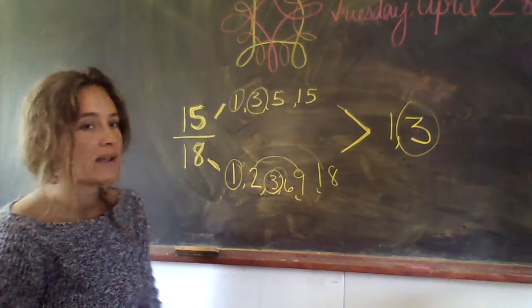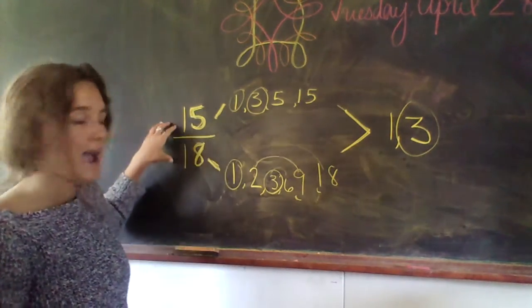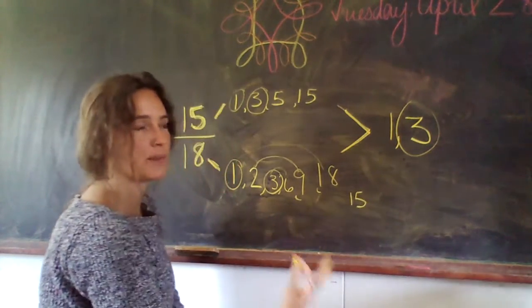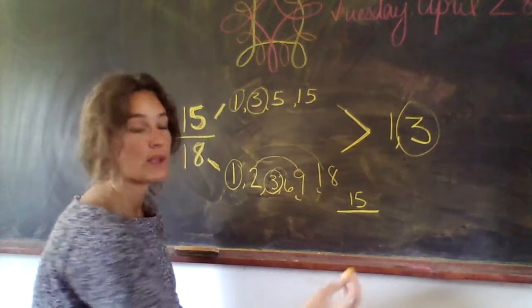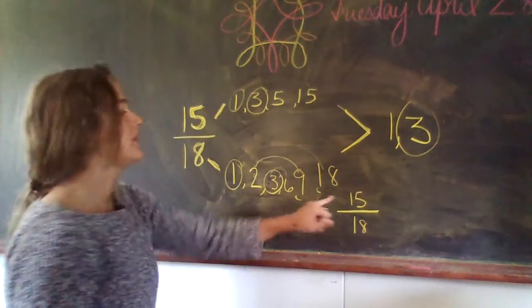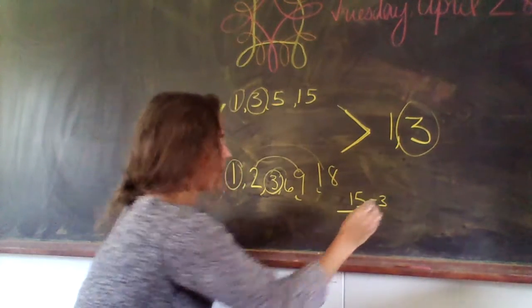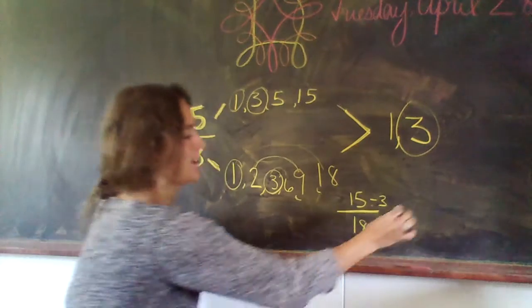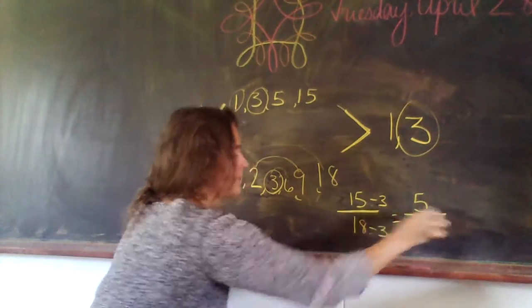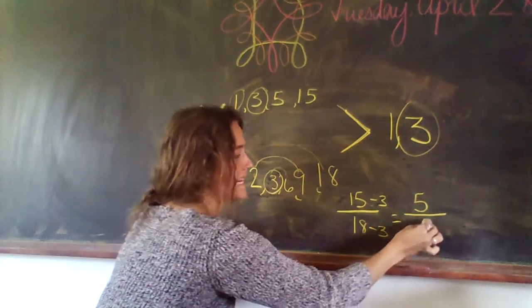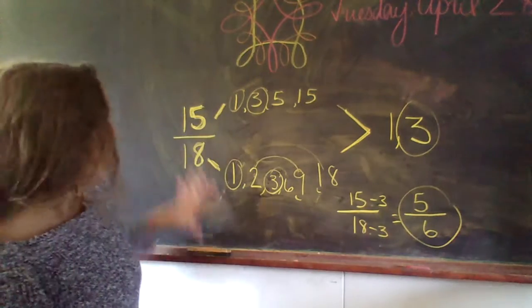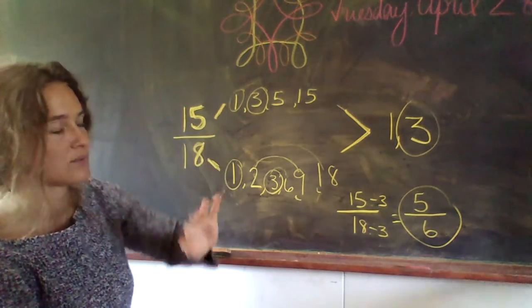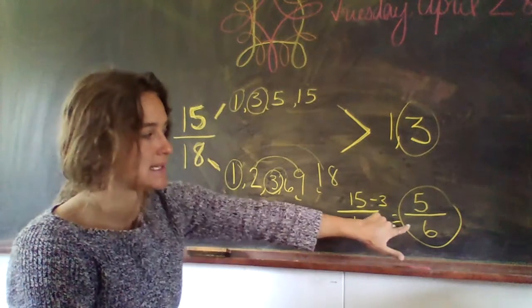Then when we get to simplifying fractions next week, we divide by the greatest common factor. This is just a little bit ahead, that's okay. You don't have to do this, I'm just showing you. 15 divided by the greatest common factor, 18 divided by the greatest common factor. 15 divided by 3 is 5. 18 divided by 3 is 6. So the simplified version of 15/18ths is 5/6ths.